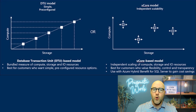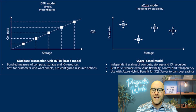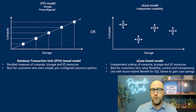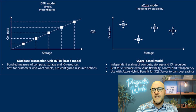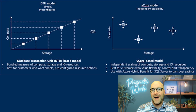A DTU, or Database Transaction Unit, is going to be a blended measure that combines CPU, memory, data, and IO, and is best suited for users who prefer a simplified approach to management of performance. This essentially abstracts the underlying hardware into a single unit of measure. So instead of separating out CPU, memory, and IO, we make it one singular unit to make it easier to understand for users who may not have in-depth knowledge of database performance tuning.